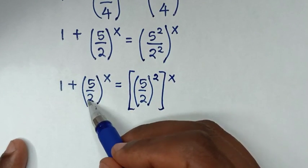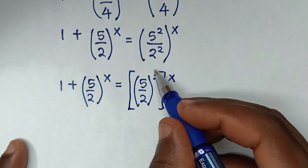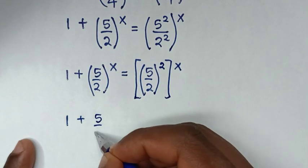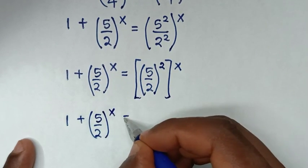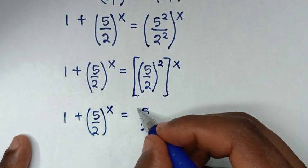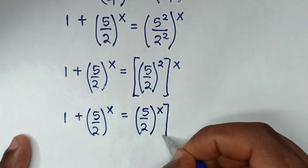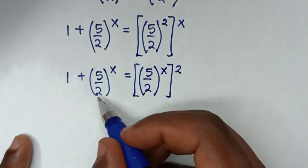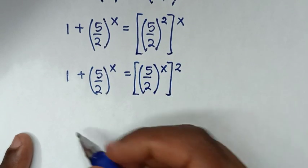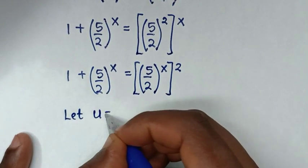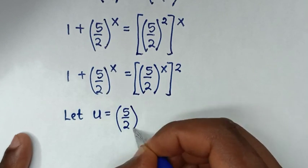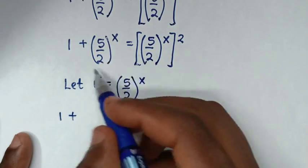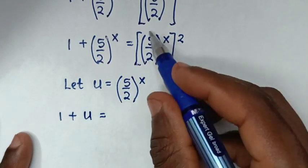Now, since (5/2)^x is common, we let u equal to (5/2)^x. Then the equation becomes 1 plus u is equal to u squared.